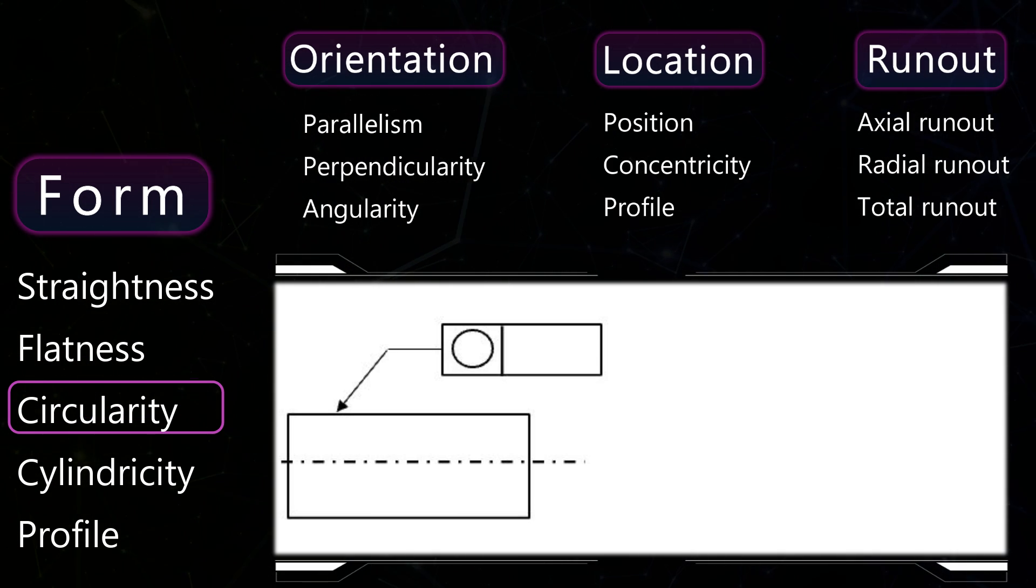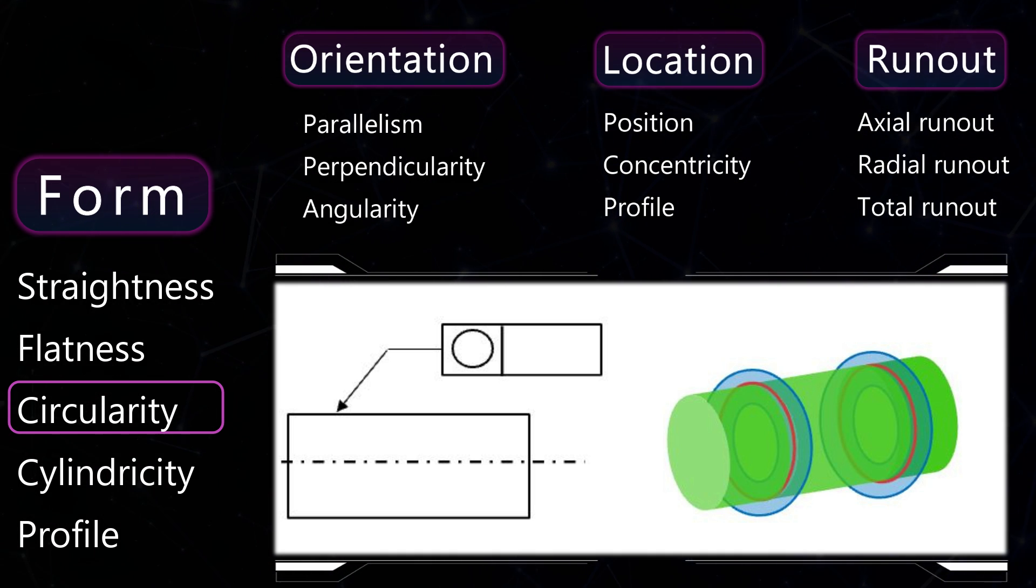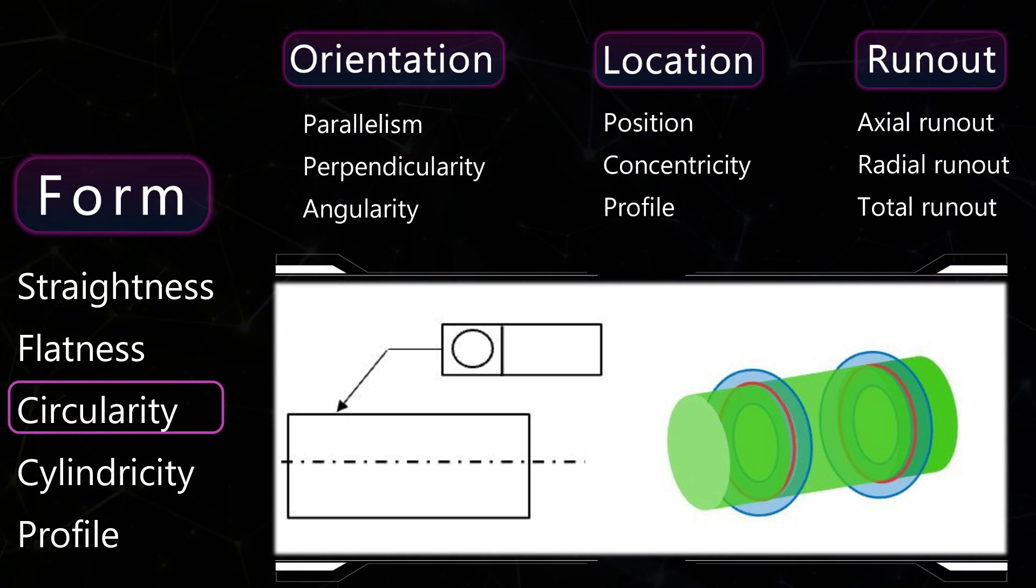Circularity. The tolerated circle should lie between two theoretical circles. The distance between them is the value of the tolerance value.